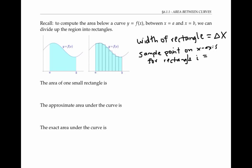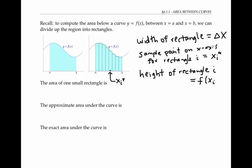One sample point for each rectangle. The sample point on the x-axis for rectangle number i is denoted by x sub i star. You used these sample points and the function f to figure out the height of each rectangle — the height of rectangle number i is given by f of x sub i star.